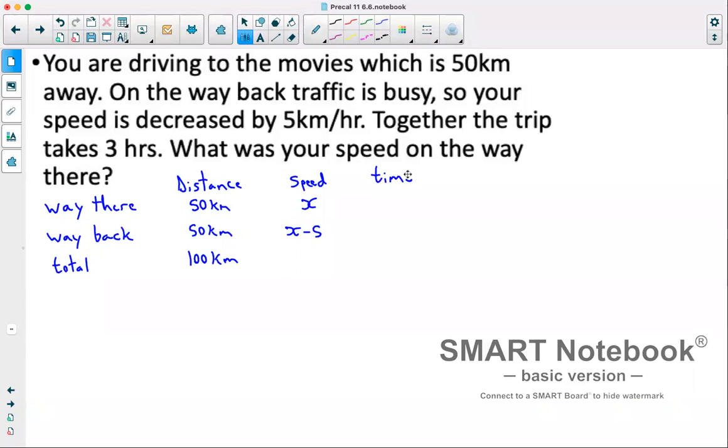Now our total time, if you remember back to science 10, you had an equation that related distance, speed, and time. Essentially, your time is your distance divided by speed. So 50 divided by x would be the time for way there. And 50 divided by x minus 5 would be the time for way back. We know that in total, it takes 3 hours. So the time for way there plus the time for way back should equal our 3 hours. So we've got 50 over x plus 50 over x minus 5 equals 3.